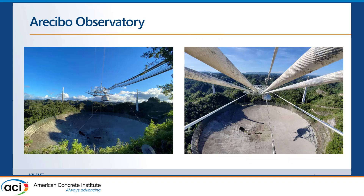In the summer of 2020, one of the main strands carrying this antenna — about a thousand tons of antenna — snapped. There are three towers supporting the antenna. Each tower had six strands to support the antenna, and there are backstays going from the other end of each tower to the ground to counteract the weight of the antenna. What happened is one of the backstay strands on the exterior of one of the towers just snapped.